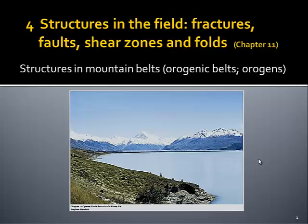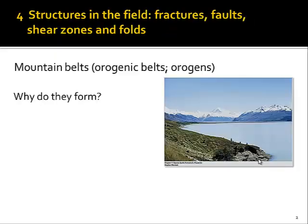Ladies and gentlemen, we are starting today with a new chapter. This chapter brings what we have been discussing at large scale — at orogenic and plate tectonic scale — into a smaller scale context, into the scale of features we actually can see in the field. We are going to talk about the formation of fractures, folds, and shear zones in mountain belts and orogenic belts. The section you should look at is chapter 11 in Marshak's textbook, where we learn about mountain belts.